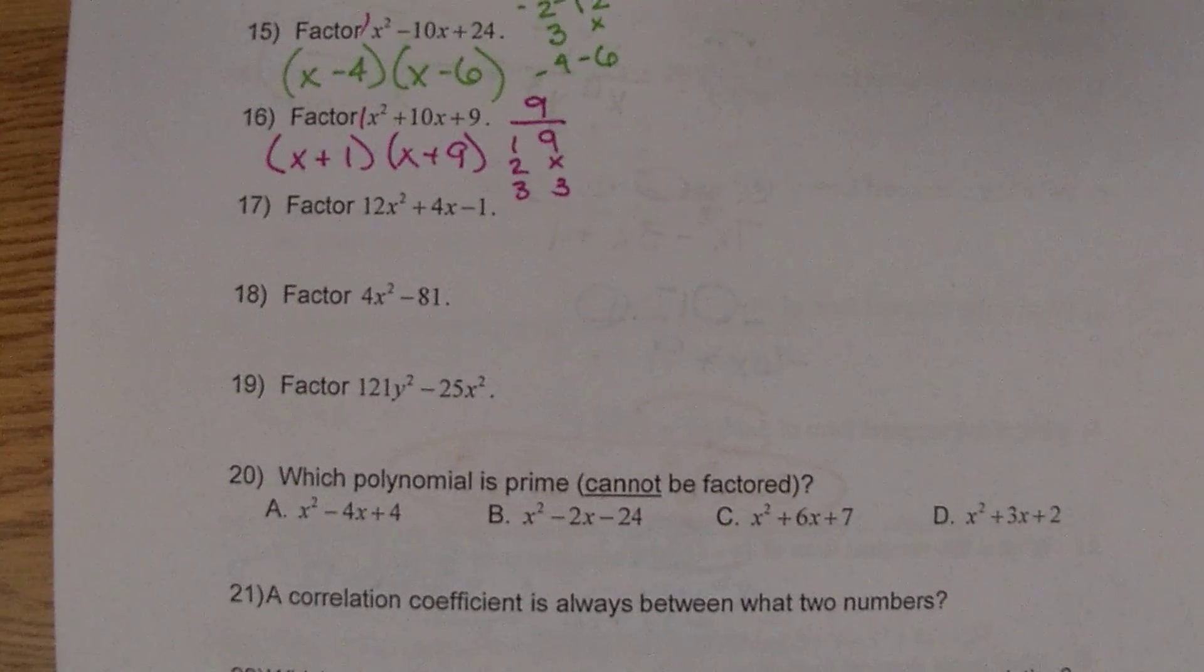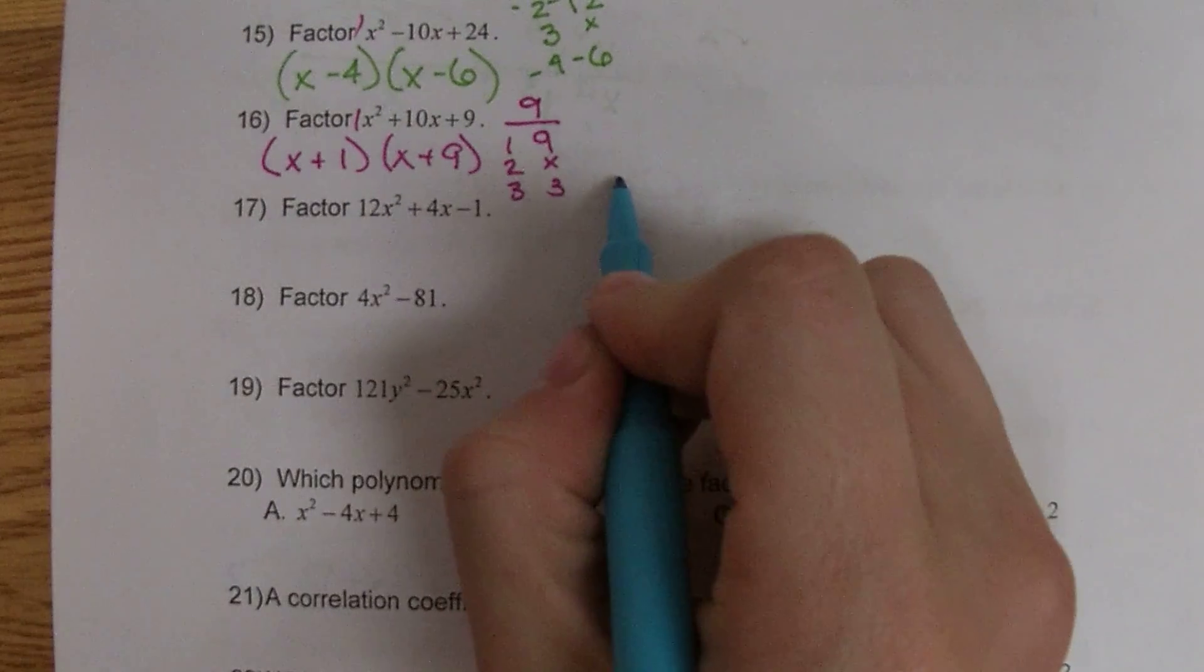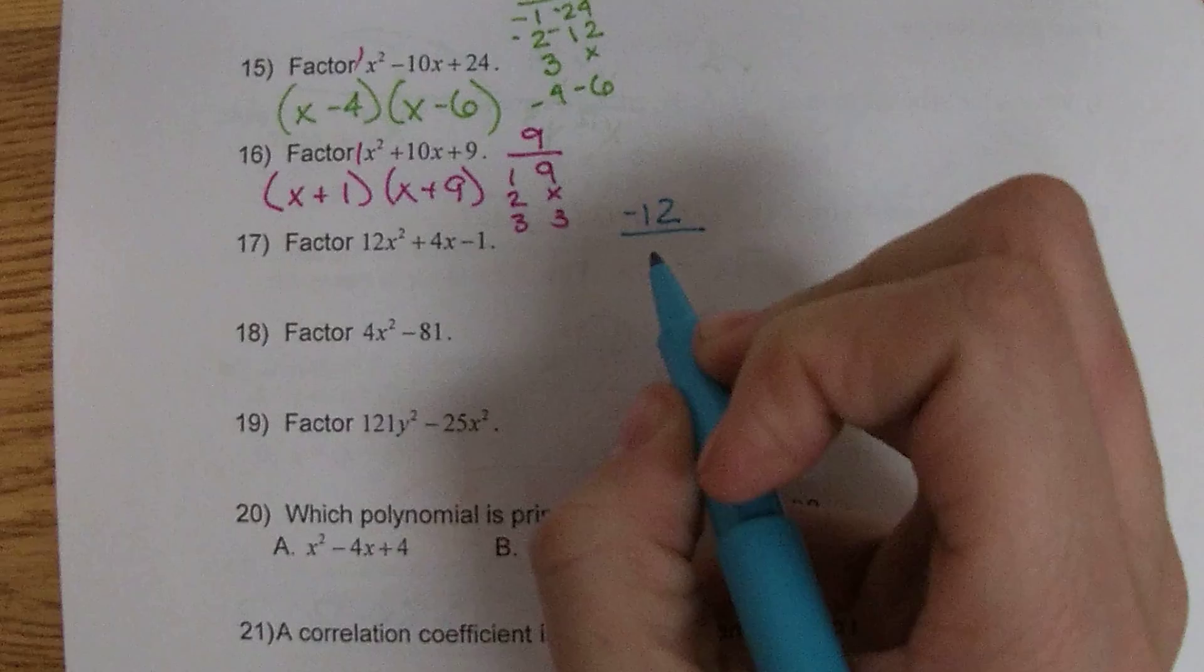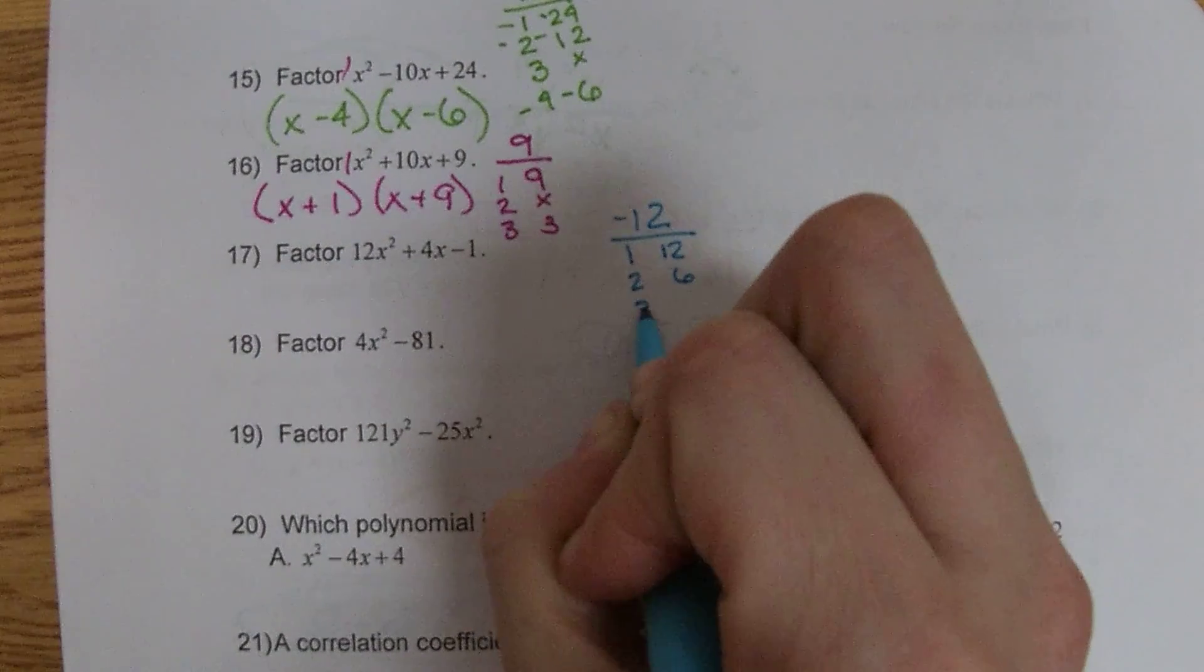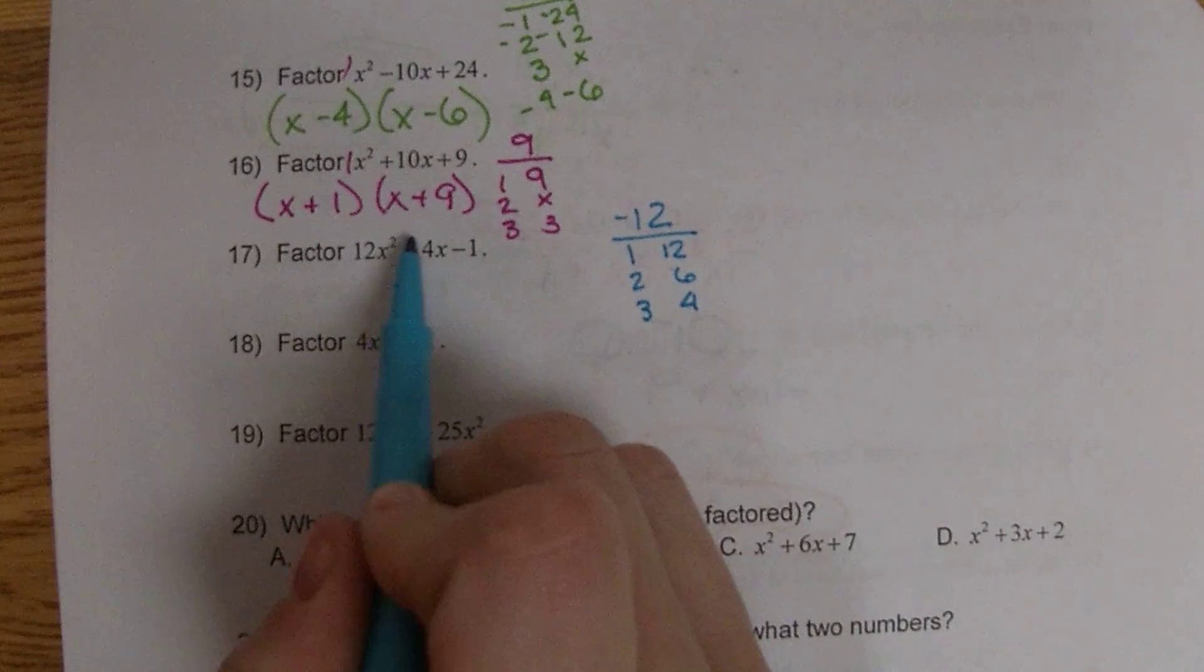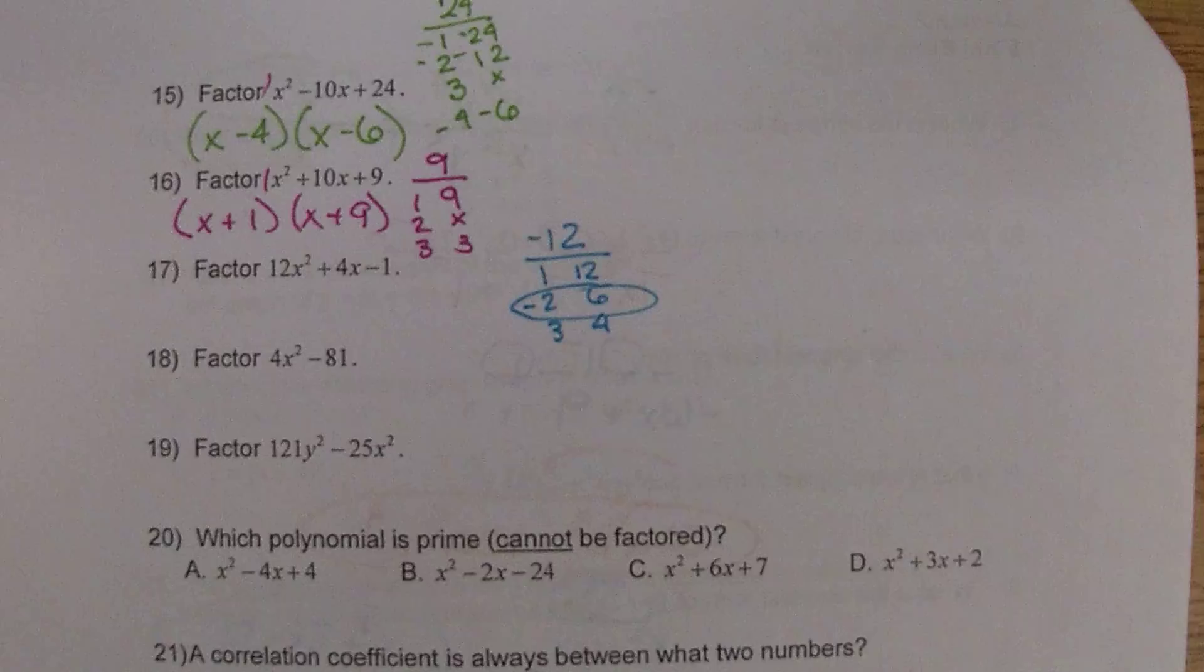Number 17, there is no GCF. So 12 times negative 1 is negative 12. 1 and 12, 2 and 6, 3 and 4. We want the larger number to be positive. So here's our pair.